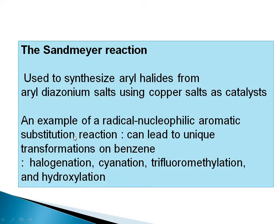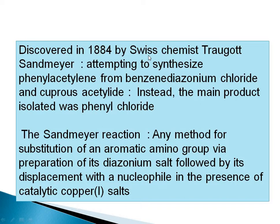The discovery was in 1884 by Swiss chemist Traugott Sandmeyer. He was trying to synthesize phenyl acetylene (C6H5–C≡CH) from benzene diazonium chloride and copper acetylide. But instead, he obtained phenyl chloride — meaning the Cl attached to the benzene ring itself, not the acetylide. Copper acted as a catalyst and transferred the Cl.